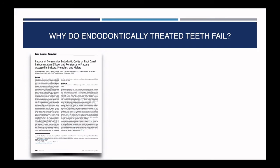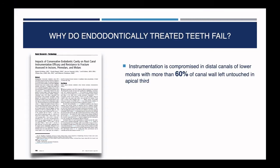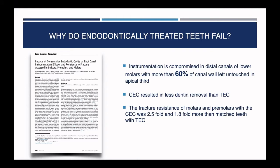Dr. Krishan looked at the conservative endodontic cavity versus the traditional approach. Importantly, instrumentation is compromised in distal canals of lower molars, with more than 60% of the canal wall left untouched in the conservative endodontic cavity. The conservative cavity resulted in less dentin removal — so we have a trade-off: we conserve more tooth structure, which helps with strength, but we fail to instrument more than 60% of the canal wall. Fracture resistance in molars and premolars with the conservative cavity is 2.5 and 1.8 fold more than matched controls with the traditional cavity.